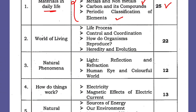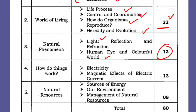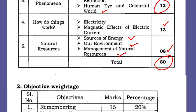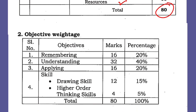'World of Living': Life Processes, Control and Coordination, How Do Organisms Reproduce, Heredity and Evolution — you can expect 22 marks. 'Natural Phenomena': Light Reflection and Refraction, Human Eye and Colourful World — 12 marks from physics. 'How Do Things Work': Electricity and Magnetic Effect of Electric Current — total 13 marks. 'Natural Resources': Sources of Energy, Our Environment, Management of Natural Resources — total 8 marks. Grand total: 80 marks.